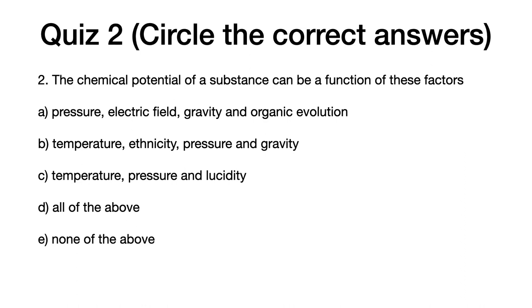Number two, the chemical potential of a substance can be a function of these factors. A. Pressure, electric field, gravity, and organic evolution. B. Temperature, ethnicity, pressure, and gravity.